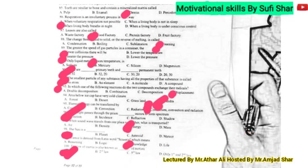Question 96: when light passes through a prism, dispersion occurs to form a spectrum. Question 97: when sound waves travel from one place to another, what is transported? Options: air, dynasty, energy, or mass. Sound is a form of energy — it transports energy through a medium. The correct answer is C — energy.